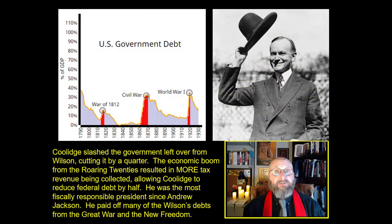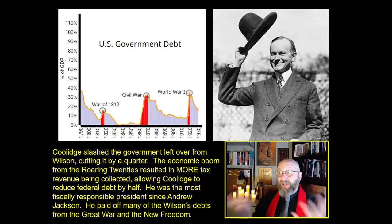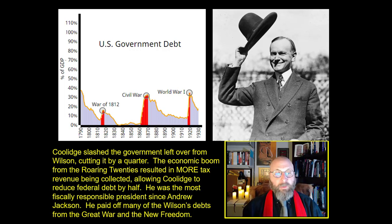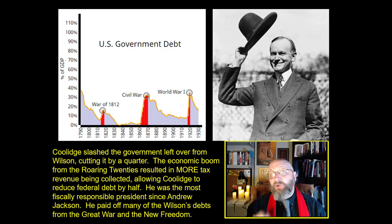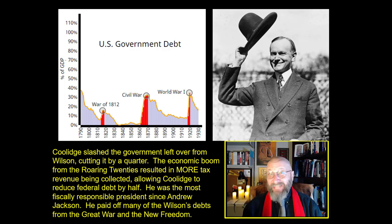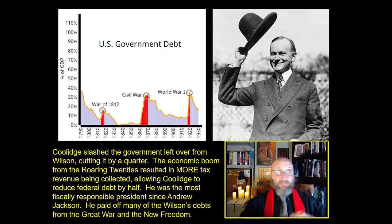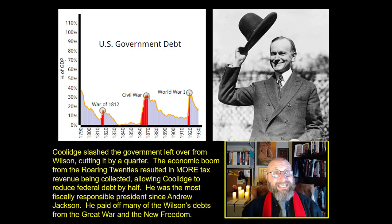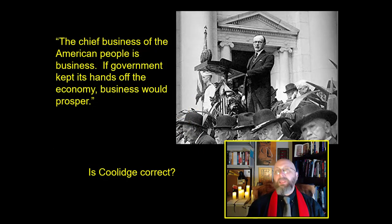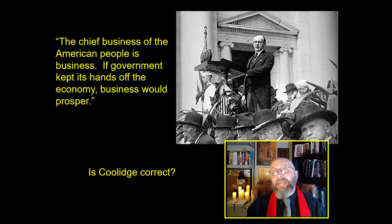Calvin Coolidge slashed the government left over from Woodrow Wilson, cutting it by more than a quarter and firing 25% of all federal employees. The economic boom from the Roaring Twenties resulted in more tax revenue, allowing Coolidge to cut the U.S. federal debt by half. He ended up being the most fiscally responsible president since Andrew Jackson, paying off many of Wilson's debts, debts from World War I, and debts from the implementation of the New Freedom.